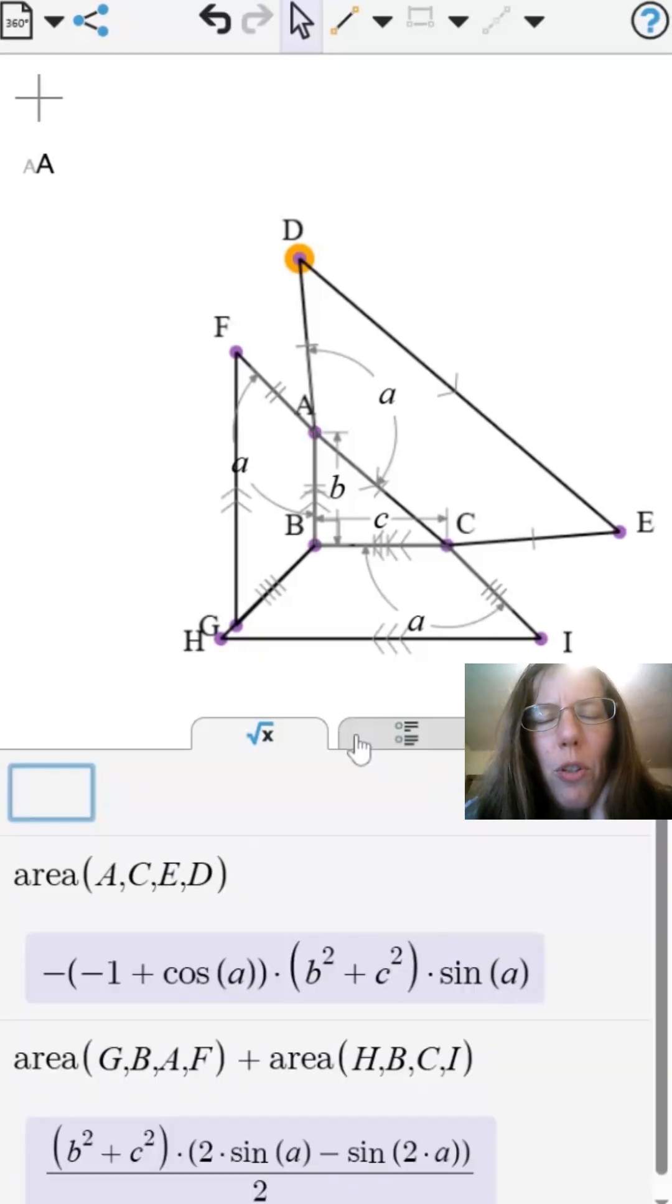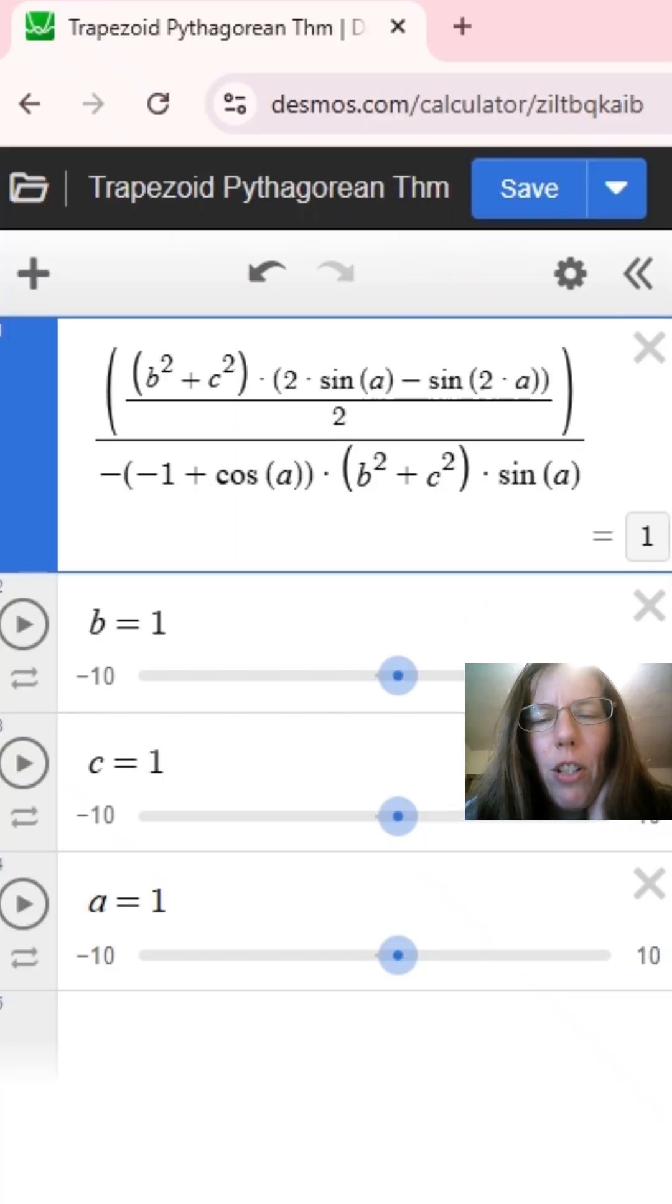Those two trigonometric expressions look a bit different, but are they equivalent? We will use Desmos to show that when written as a ratio, they equal 1.